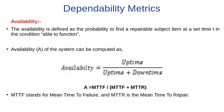The second important dependability matrix is availability. As per definition, availability is defined as the probability to find a repairable subject item at a set time T in the condition able to function. Availability of the system can be computed by this formula, in which uptime is the time in which the system is functioning correctly. Mathematically, it is described as mean time to failure divided by mean time to failure plus mean time to repair.